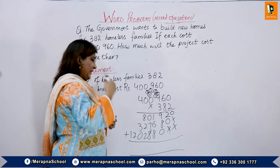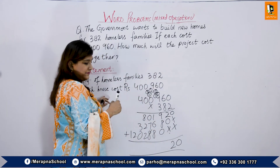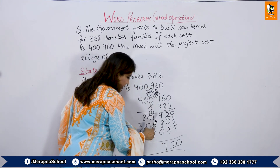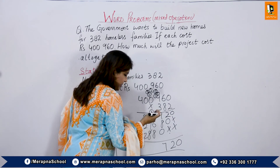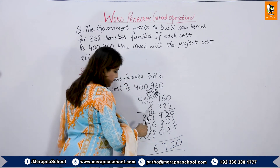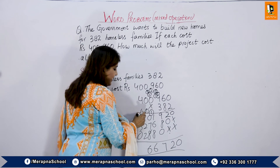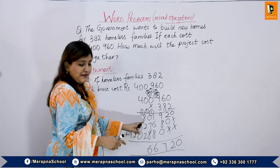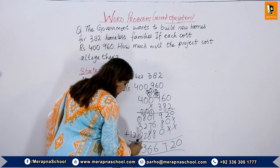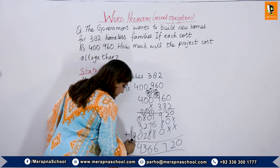Now we do addition of the three partial products. Adding column by column: 0; 2; 8 plus 9 is 17 — carry 1, write 7; next column gives 16 — carry 1, write 6; 7 plus 1 is 8; 8 plus 8 is 16; 9 plus 2 plus 2 is 13 — carry 1, write 3; then 4; and finally 12. The result is 124,366,720.